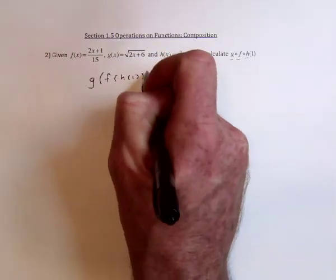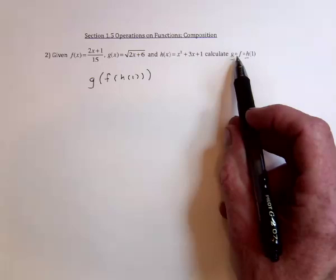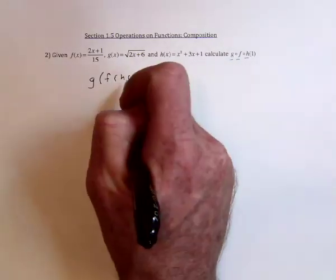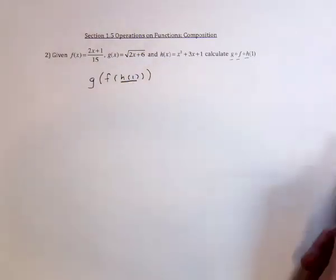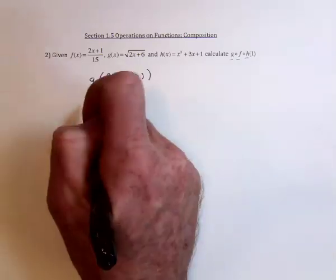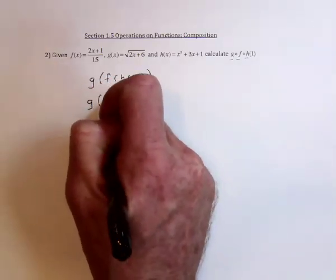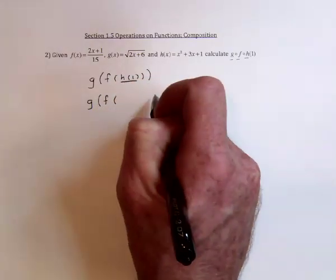Another way to write the composition instead of using the circle is to use parentheses. First of all, we need to find out how much is the h function with a 1 substituted in. The g is going to be the last thing, the f is the middle, and now we need to find out how much is h with a 1 substituted in.